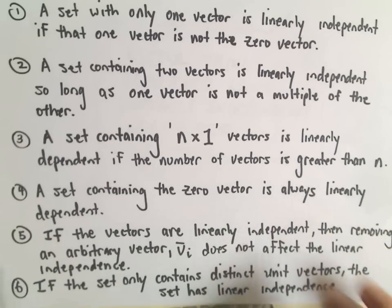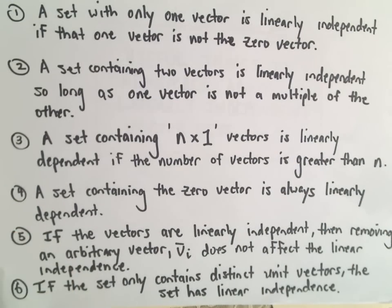Just to refresh yourself, if you've worked with linear independence a little bit: a set with only one vector is linearly independent, as long as that vector is not the zero vector.